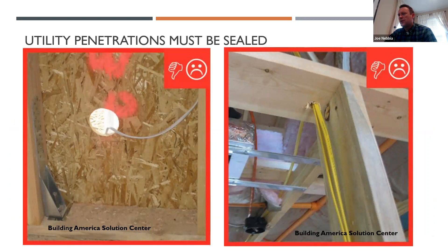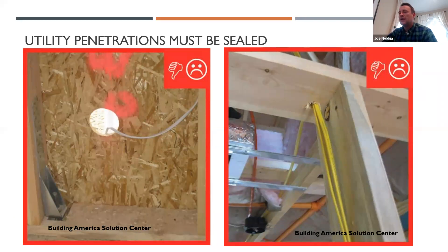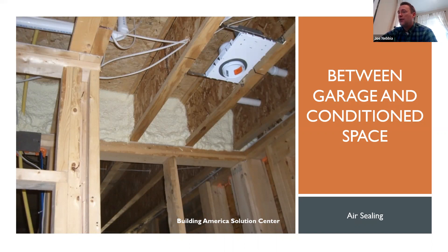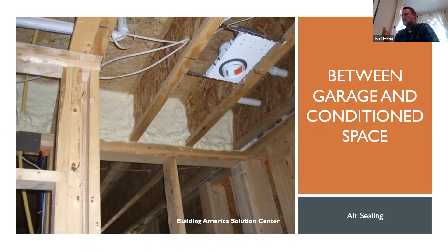All penetrations through the envelope must be sealed. On the left, you see a big hole with a wire going out of it — hopefully that was caught before the home was finished. On the right, you see wires going into an attic space; that needs to be sealed before the air barrier inspection, because you could have air leaking from the attic into the conditioned space. Conditioned space and garage junctions have to be air sealed. Here we see spray foam between those spaces — it doesn't have to be spray foam, it could be solid blocking with caulking at all the joints. We don't want a floor cavity where the garage is cold and the inside is heated and air is just moving between those two spaces.